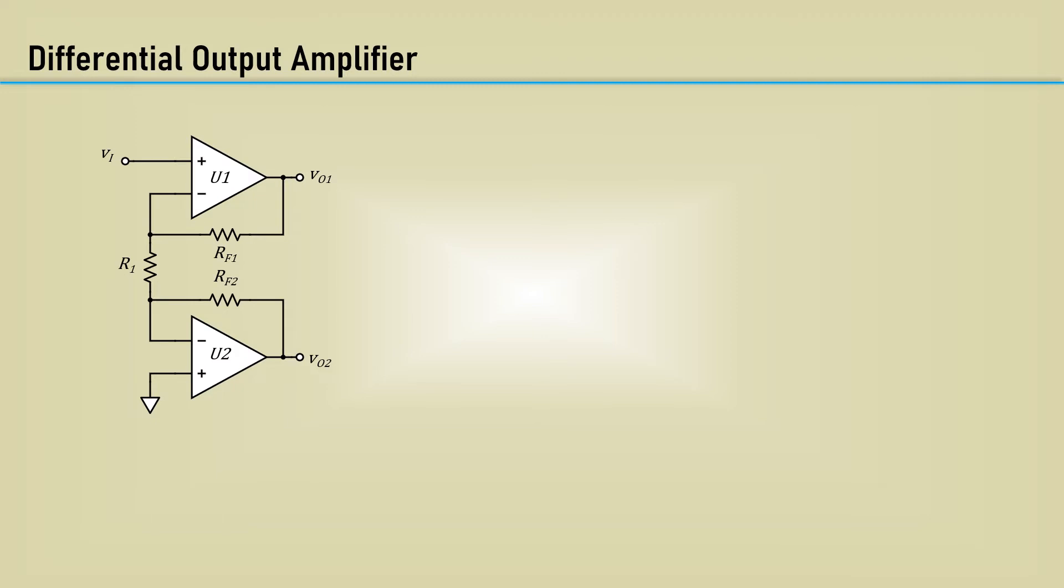We will now take the input stage of the instrumentation amplifier and make a differential output amplifier. This circuit has two output voltages which have opposite polarities. That is, if VO1 is positive, VO2 will be negative and vice versa.